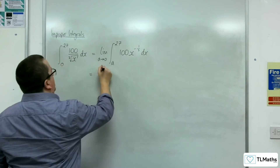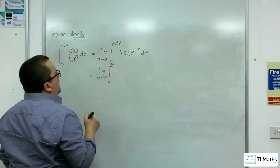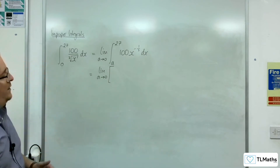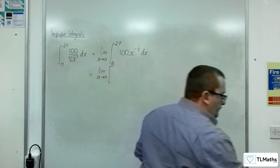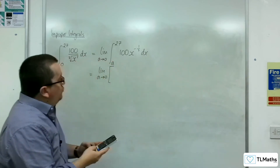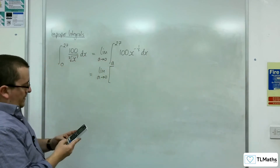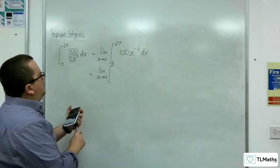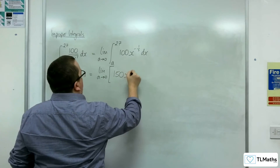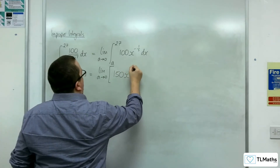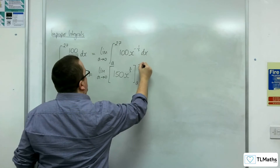So the limit as a tends to 0. Now we need to integrate — we need to add 1 to the power and divide by the new power. So we do 100 divided by two thirds, and we get 150. So 150x to the two thirds, evaluated between a and 27.